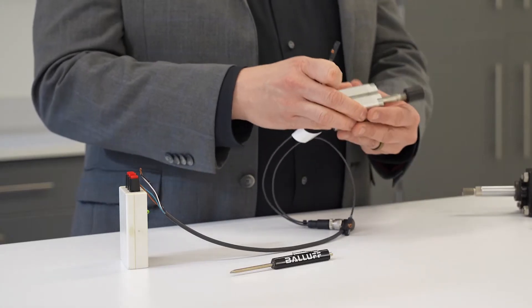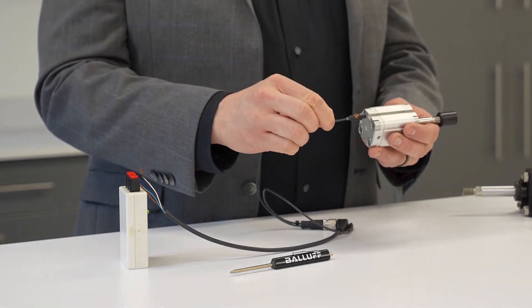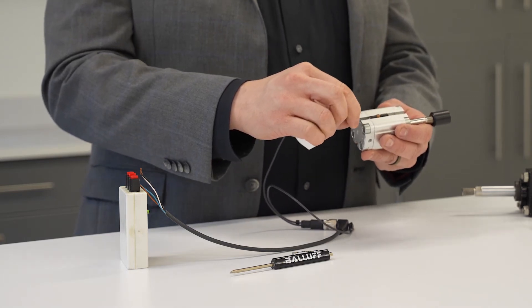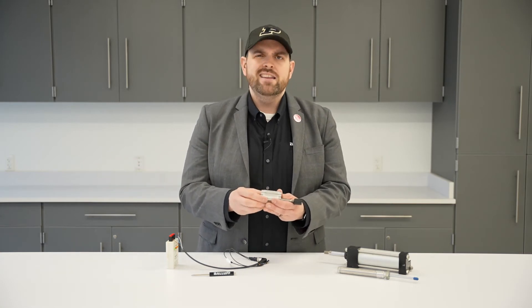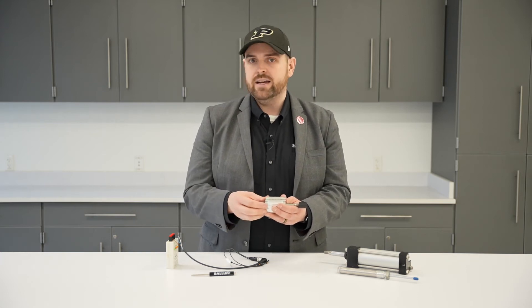There are a couple of different ways to mount in a C slot or T slot like this. Some sensors have to slide in from the end like this, and that can be a little bit challenging when you have long cylinders, you have a lot of automation close together and maybe a mounting plate or something here. That can be a little challenging to get the slide in sensor or to replace the slide in sensor.